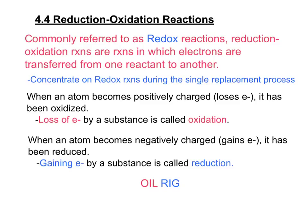When an atom becomes positively charged, or loses electrons, it has been oxidized. The loss of an electron by a substance is called oxidation. Conversely, when an atom becomes negatively charged, gains electrons, it has been reduced. Gaining an electron by a substance is called reduction.